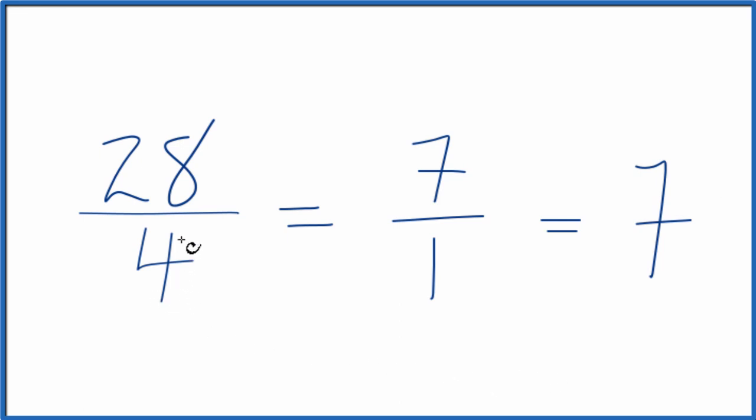So in answer to our question, the fraction 28 fourths, when we simplify that, you get 7 over 1, or because 7 divided by 1 equals 7, you could just write 7. This is Dr. B, and thanks for watching.